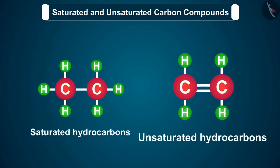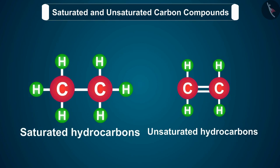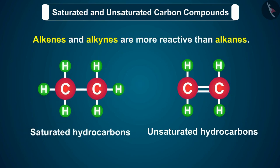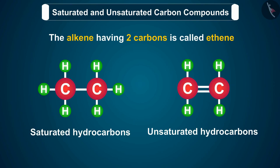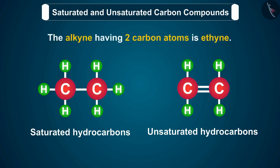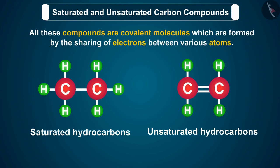Unsaturated hydrocarbons are more reactive compared to saturated hydrocarbons — alkenes and alkynes are more reactive than alkanes. The alkane having two carbons is called ethane, the alkene having two carbons is called ethene, and the alkyne having two carbon atoms is ethyne. All these compounds are covalent molecules formed by the sharing of electrons between various atoms.